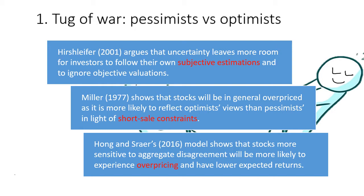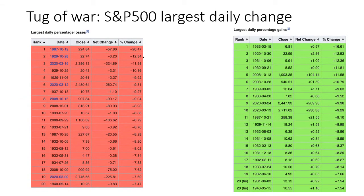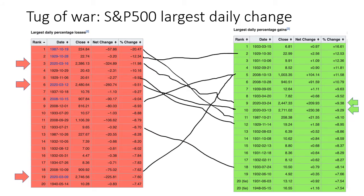Furthermore, due to short-sale constraints, the market will reflect in general the optimist's view rather than the pessimist's view. Therefore, overpricing is more likely. As Hong and Sraer's model shows, firms that are more sensitive to aggregate disagreement would be more likely to experience overpricing, and hence have a lower expected return. This intensified tug of war during high uncertainty periods can be exemplified by record-breaking daily gains and losses in the S&P 500. We can see three out of the top 20 losses are from March 2020 when the pandemic began, and two of the top 20 gains are also from the same period. Especially, we see a loss of 9.51% on March 12th, which is closely followed by a similar gain the day after.